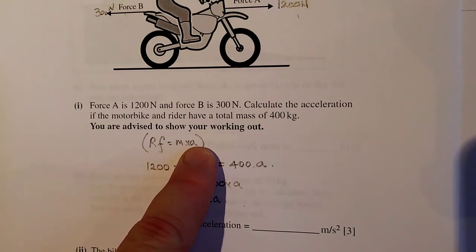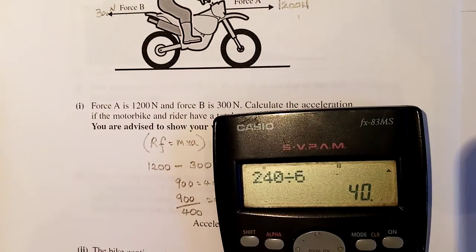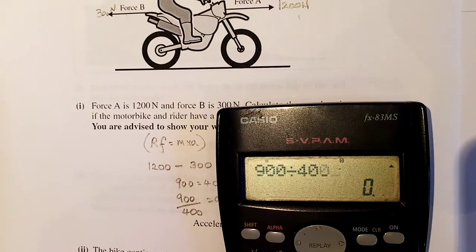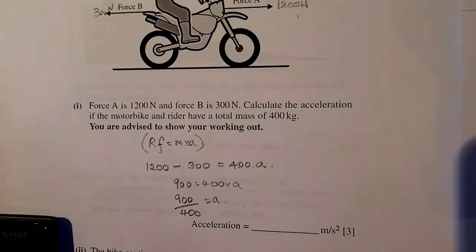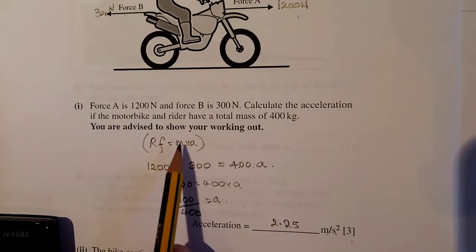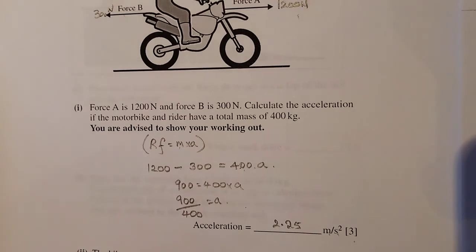1200 take away 300, that's your resultant force. This is equal to mass, 400 times A. Force in newtons, mass in kilos, acceleration in meters per second squared. So we'll get the old calculator in. 900 over 400, it's roughly 2 in a bit. 900 divided by 400 is 2.25. 2.25 meters per second squared. So three marks. One, two, three.